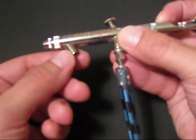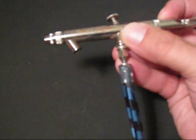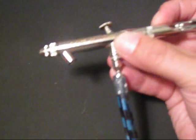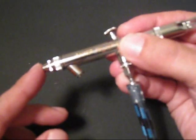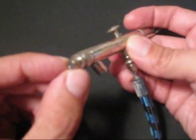There's also the paint feed. This is this connection here, where you can attach a paint cup or paint jar. At the top of it, or the front of the airbrush, there's a nozzle.